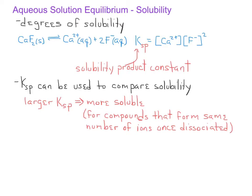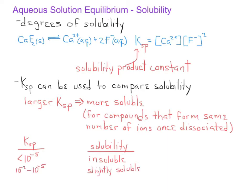In general, if a compound has a Ksp value that is less than 10 to the negative 5, we'll say that the compound is insoluble. If the Ksp value is between 10 to the negative 2 and 10 to the negative 5, we'll say that that compound is slightly soluble. And if the Ksp value has a value greater than 10 to the negative 2, we'll say that that compound is soluble in water.